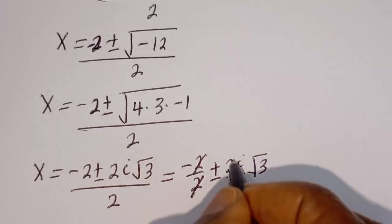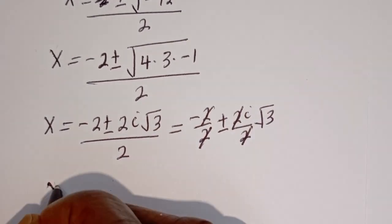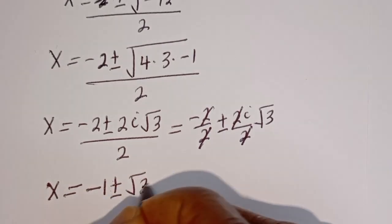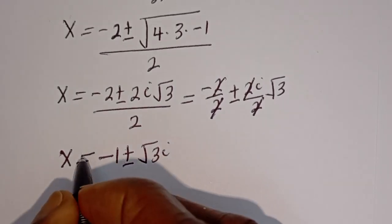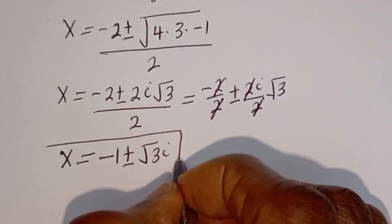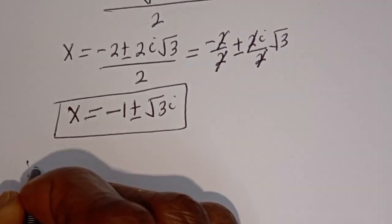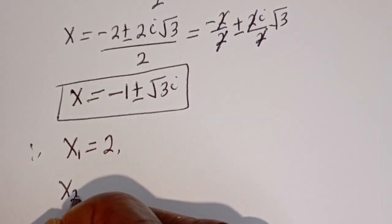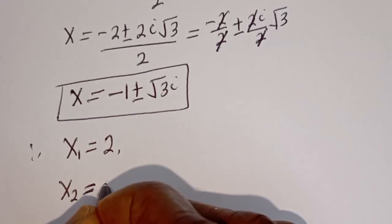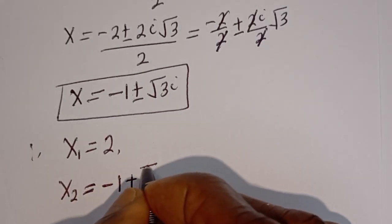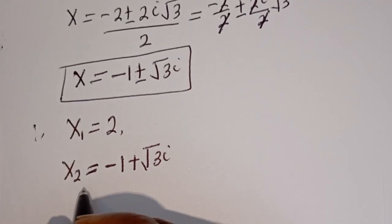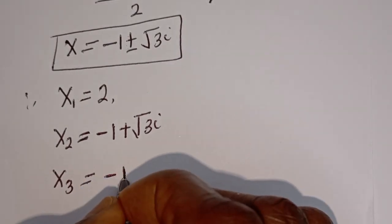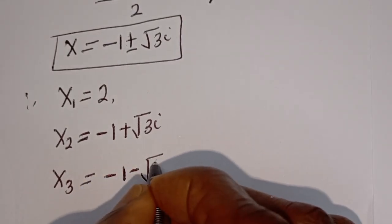Cancelling, s is equal to minus 1 plus or minus root 3 i. These are the other values of s. Therefore s1 is equal to 2, s2 is equal to minus 1 plus root 3i, and s3 is equal to minus 1 minus root 3i.